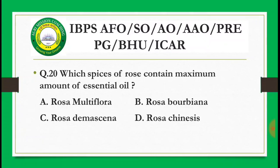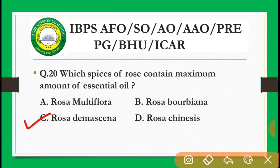Next question: Which species of rose contains the maximum amount of essential oil? Options are: Rosa multiflora, Rosa Bourboniana, Rosa damascena, Rosa chinensis. The correct answer is Rosa damascena — it contains the maximum amount of essential oil among rose species.